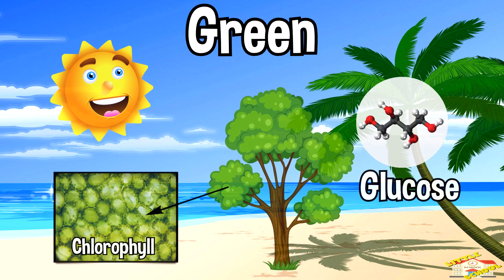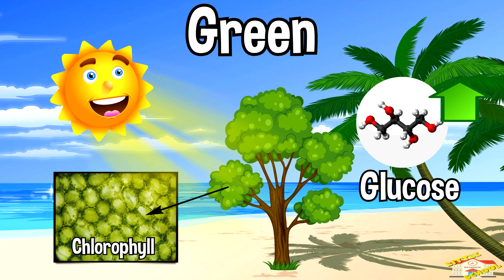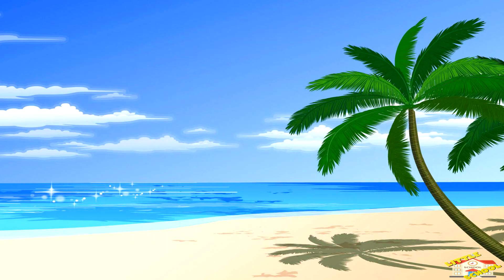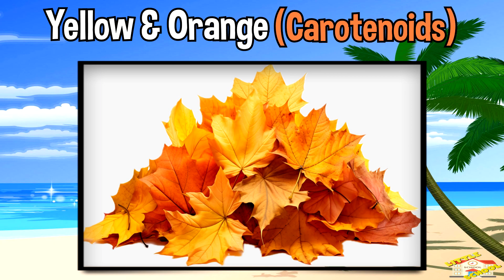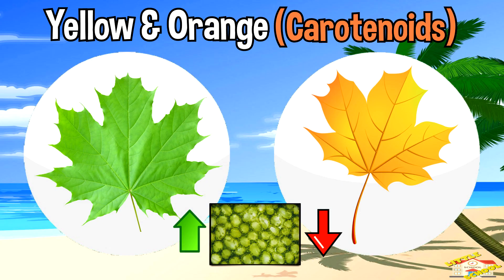Green chlorophyll helps trees make food using sunlight. Yellow and orange are carotenoids. These pigments are in the leaves all year but are covered up by the green chlorophyll in summer.